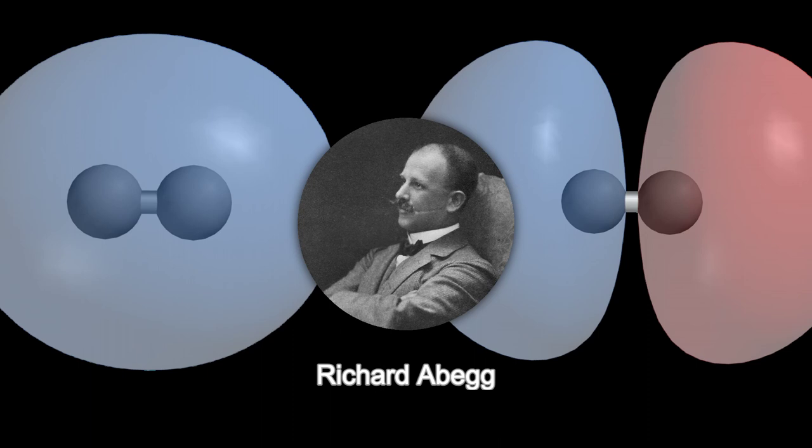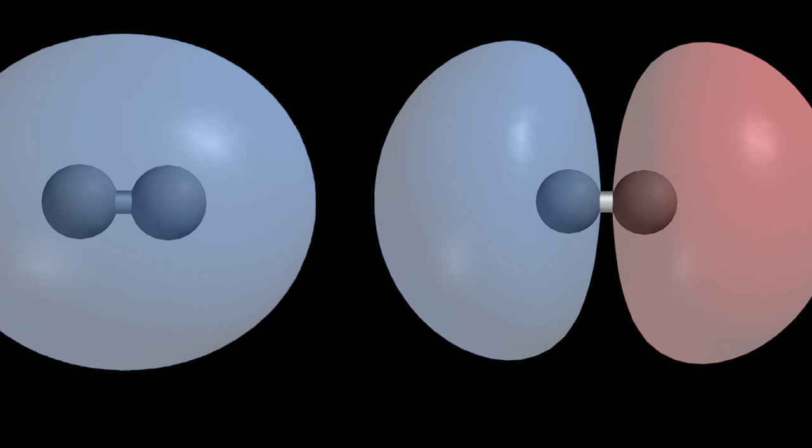Undeterred, Gill pressed on, and in 1916 he published his influential paper on chemical bonding titled 'The Atom and the Molecule.' In this landmark paper, he introduced the concept of the covalent bond, a bond formed by a shared pair of electrons. He also coined the term odd molecule to describe a molecule where electrons are not shared. Additionally, Gill presented his famous Lewis dot structures and incorporated his earlier cubic atom model.